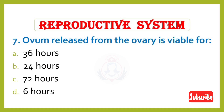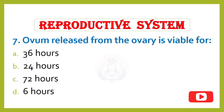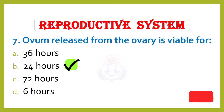Question 7. Ovum released from the ovary is viable for: Option A – 36 hours, Option B – 24 hours, Option C – 72 hours, Option D – 6 hours. Correct answer is Option B: 24 hours.